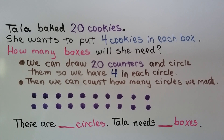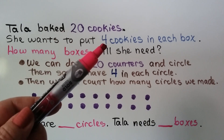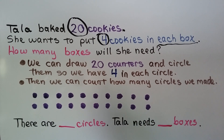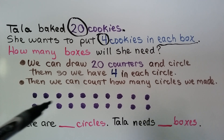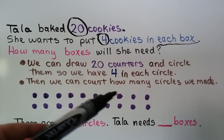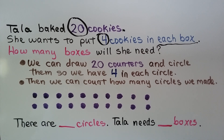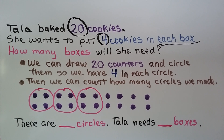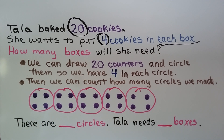Tala baked twenty cookies and wants to put four cookies in each box. How many boxes will she need? Our important numbers are twenty cookies and four per box. We draw twenty counters and circle groups of four. We circle four, then another four, then again, and again. We have one last group to circle, giving us five circles total — five groups. That means Tala needs five boxes.